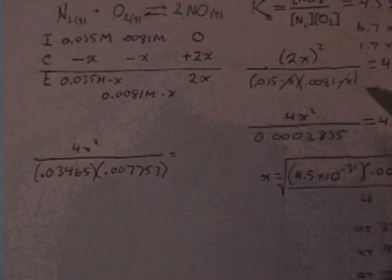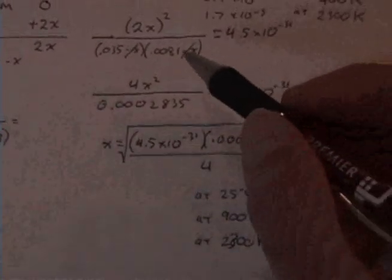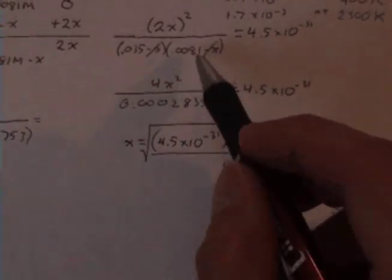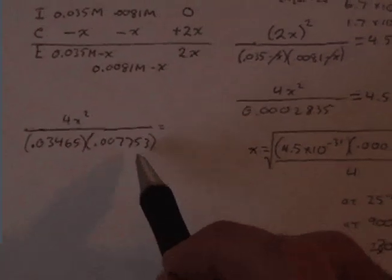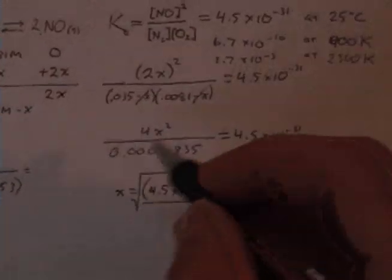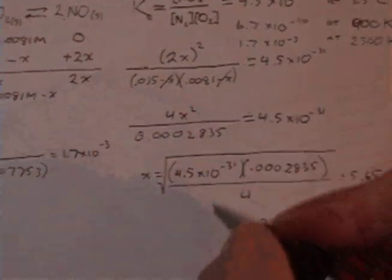Instead of being zero and we're just going to drop it out, we found that wasn't quite a valid assumption because it does modify particularly this value more significantly. The constant we have is 1.7 times 10 to the minus third.